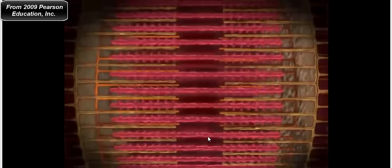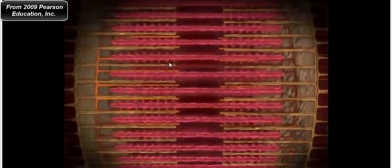Myosin is not just a contractile protein — it's also an enzyme, and that enzymatic mechanism is what causes it to contract. The yellow filaments lying between the thick filaments are the thin filaments; their major protein is called actin. On each actin protein there is a myosin binding site. For a cross-bridge to form in the sarcomere, myosin has to bind to actin.